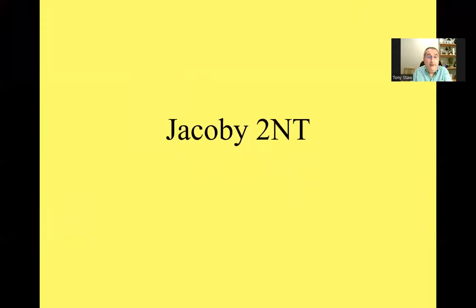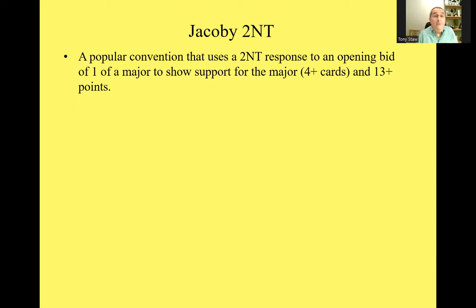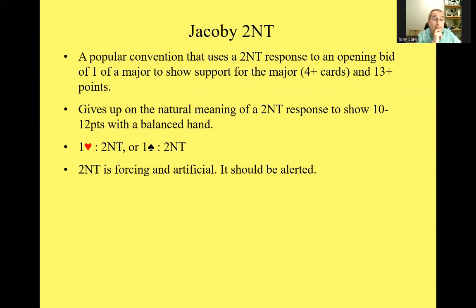Jacoby Two No Trump is a very popular convention that uses a Two No Trump response to an opening bid of one of a major to show support for your partner's major and enough points for game — normally 13 or more points. Two No Trump becomes an artificial bid and gives up on the natural meaning of Two No Trump, which would typically show something like 10 to 12 points and a balanced hand without a fit for your partner's major. So it is these two bidding sequences: one heart Two No Trump, or one spade Two No Trump. The Two No Trump bid is forcing and artificial, and it should be alerted.